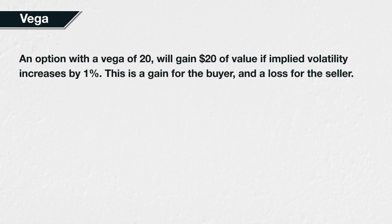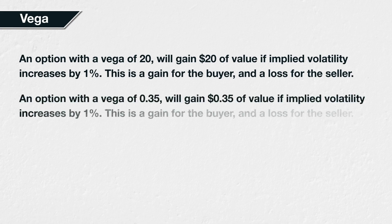For example, an option with a Vega of 20 will gain $20 of value if implied volatility increases by 1%. This would represent a $0.20 increase in profit for the buyer of the option, and a $0.20 decrease in profit for the seller of the option. An option with a Vega of 0.35 will gain $0.35 of value if implied volatility increases by 1%, representing a $0.35 increase in profit for the buyer and a $0.35 decrease in profit for the seller.